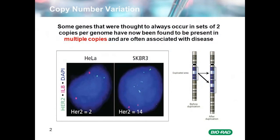As many of you know, genes that are expected to occur in two copies per genome can sometimes be found present in one, three, or more copies. In rare instances, the genes are missing altogether. Copy Number Variations often result in too few or too many dose-sensitive genes being present, thereby being responsible for phenotypic variability, complex behavioral traits, and certain diseases.